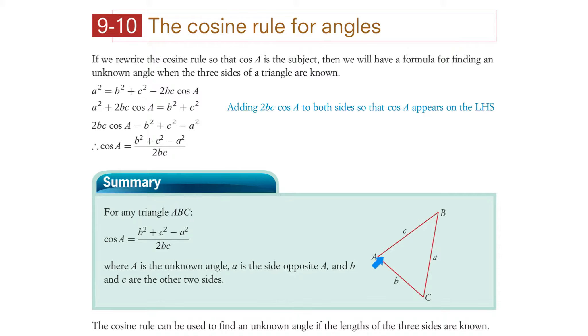And note again, at the apex, the angles are the capital letters and the lengths of the sides are the smaller letters. The cosine rule can be used to find an unknown angle if the lengths of the three sides are known.